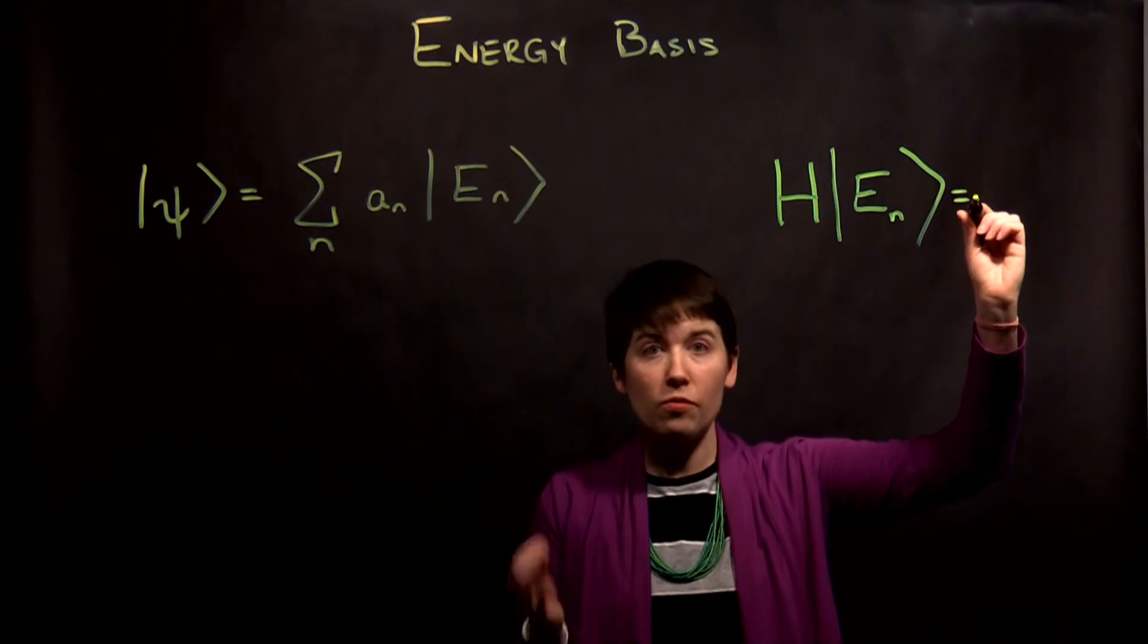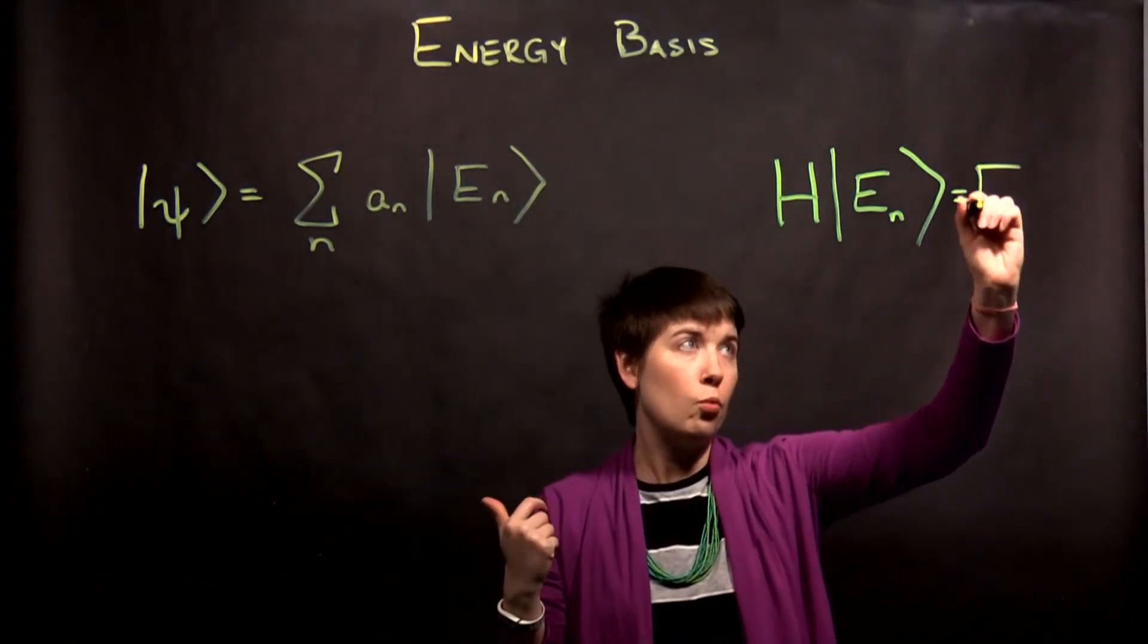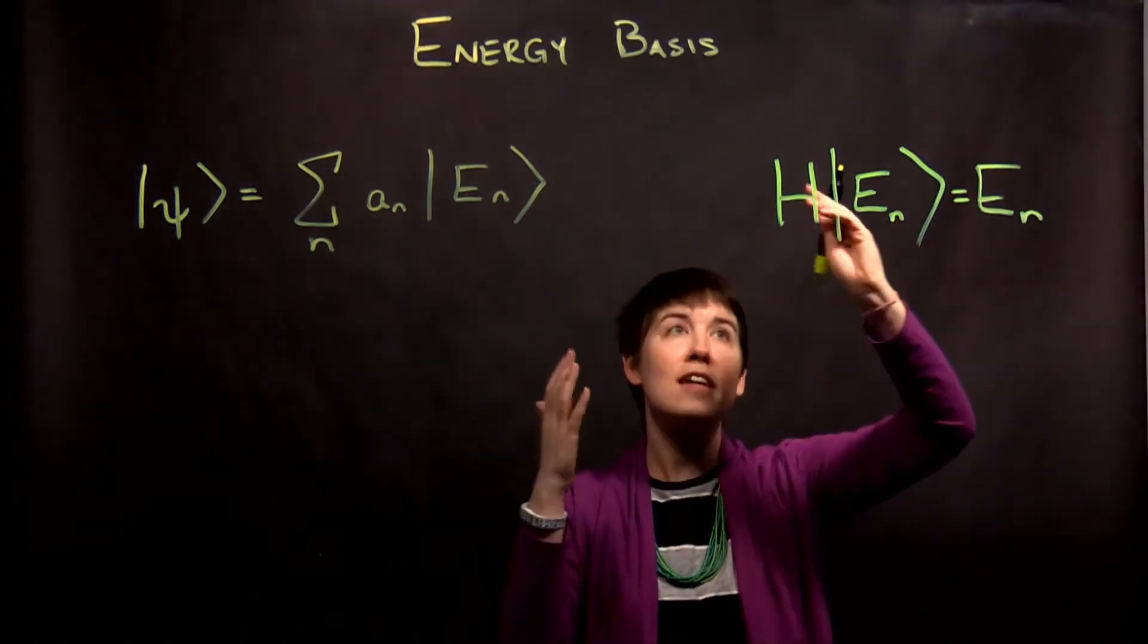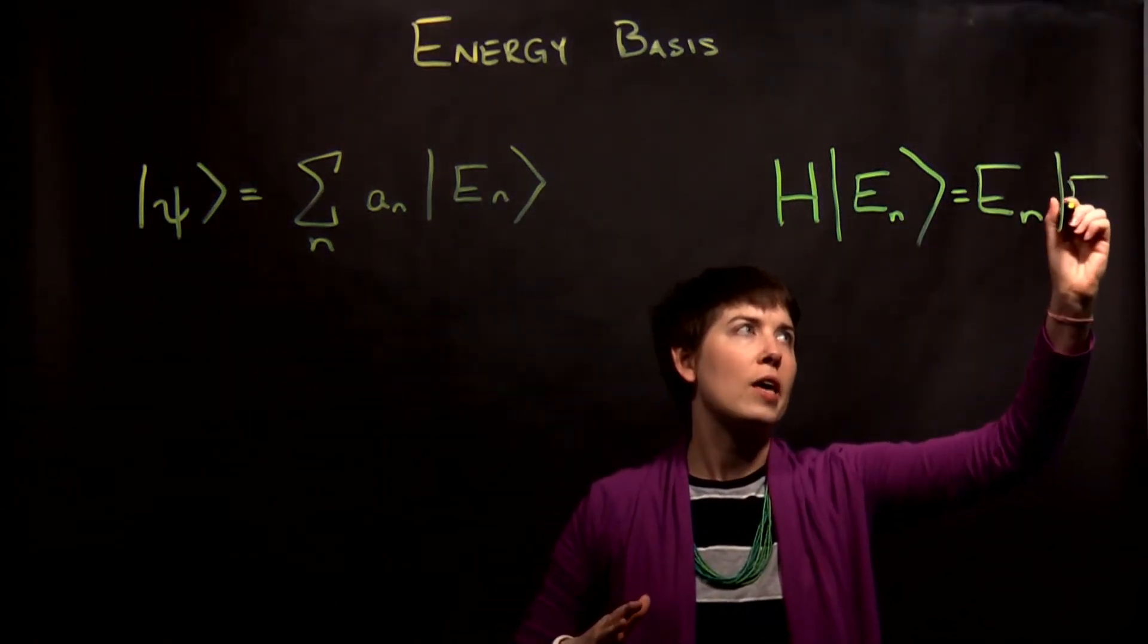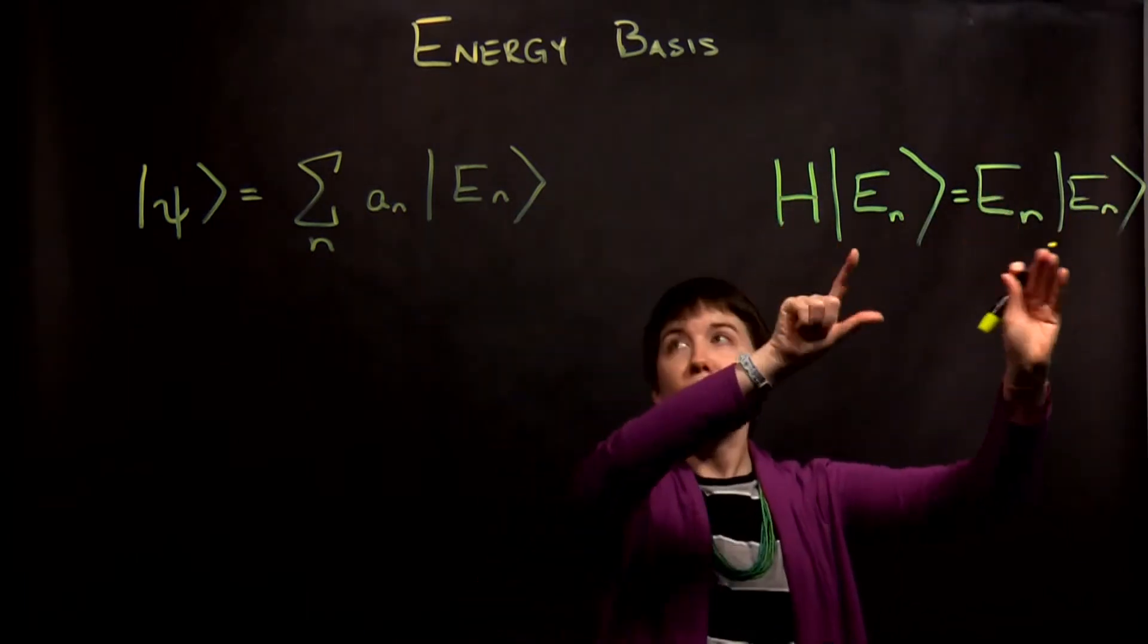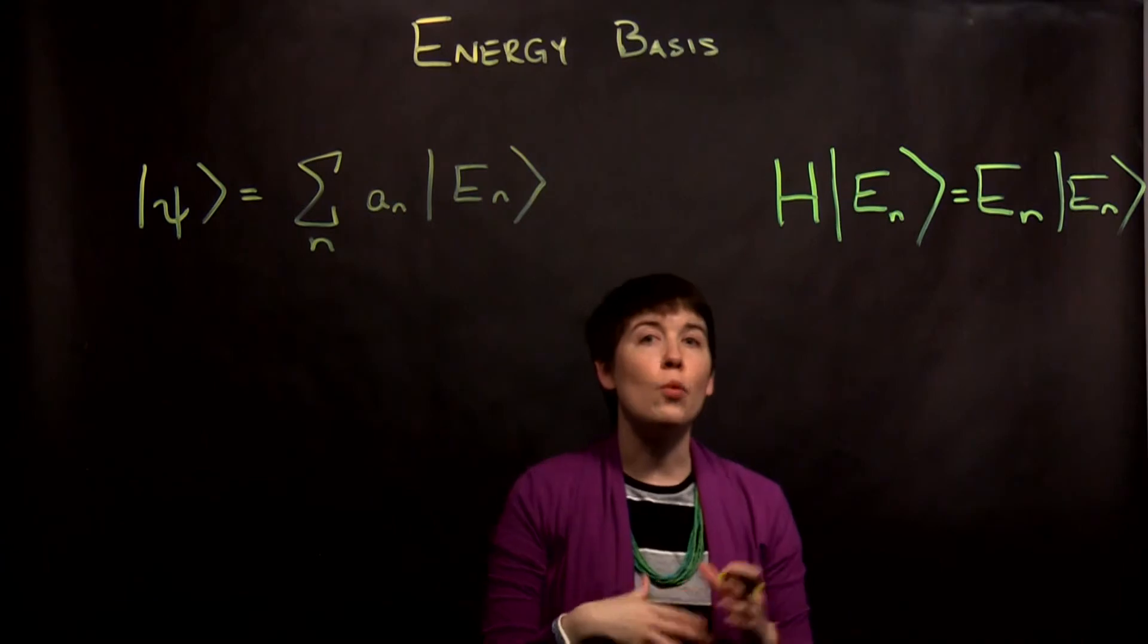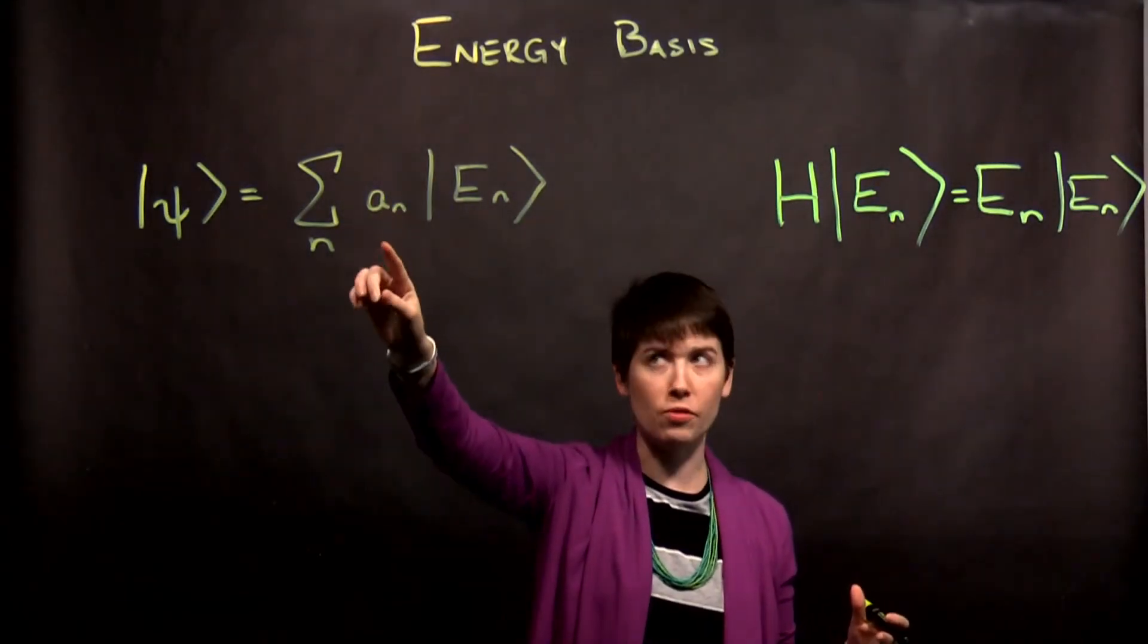Then we get some coefficient, which is our eigenvalue, which will be the energy itself. We're making a measurement on this system, we get back an energy, and we have not changed the state. This is what's defining these states, and if we want a general quantum state, we do a sum where we have these coefficients.